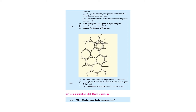Question 15: identify the plant tissue — it is simple parenchyma tissue, which is a living tissue. Labeling: 1 — cytoplasm, 2 — nucleus, 3 — vacuole, 4 — intercellular spaces. The main function of parenchyma is the storage of food.